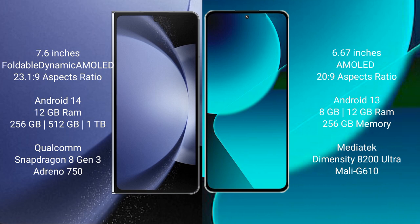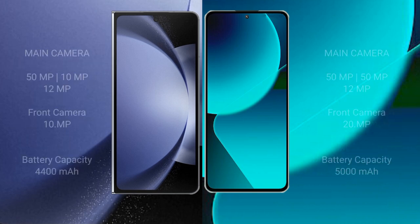Samsung Galaxy Z Fold 6 comes with 12GB RAM and 256GB, 512GB, or 1TB internal storage, powered by the Qualcomm Snapdragon 8 Gen 3 processor with Adreno 750 GPU. Xiaomi 13T comes with 8GB or 12GB RAM and 256GB internal storage, powered by the MediaTek Dimensity 8200 Ultra processor with Mali-G610 GPU.